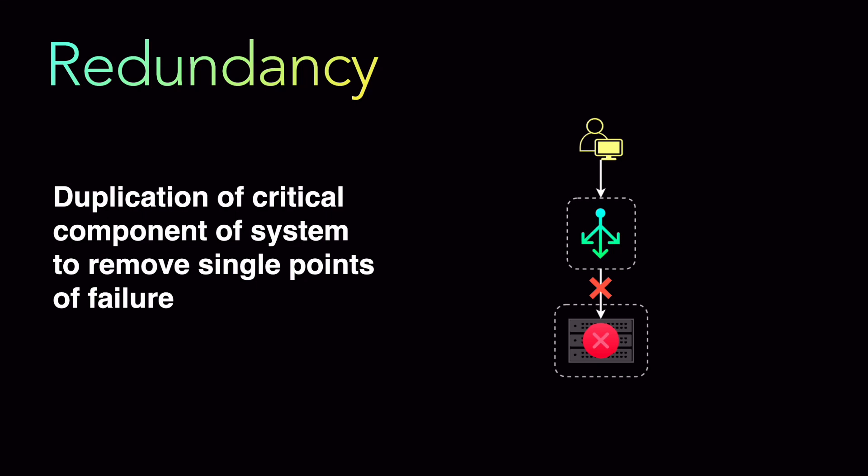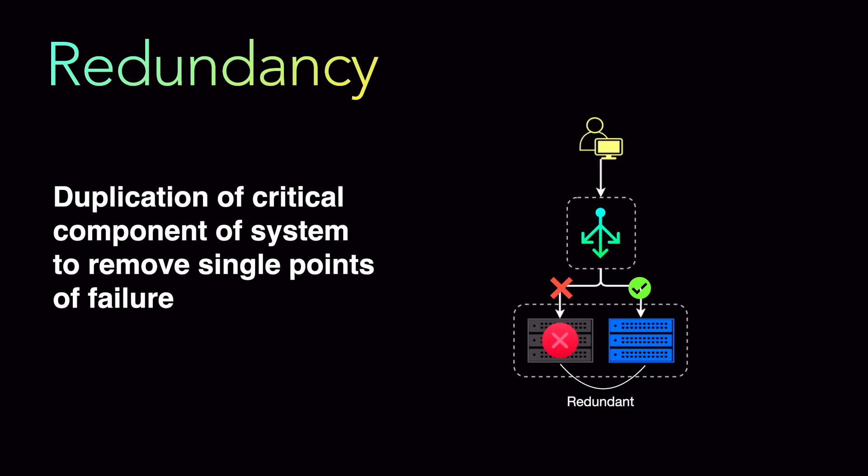This is where redundancy comes in. We can add multiple components in the service layer. So even if one of the components fails and is not able to function, there is another redundant component with the same function that can still serve the requests. These two components are basically the redundant components.